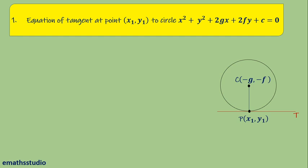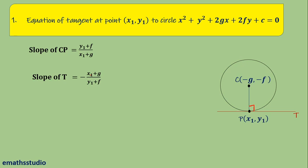First of all, I have joined CP. Now CP has a slope, which can be obtained by the formula (y2 − y1)/(x2 − x1), so it becomes (y1 + f)/(x1 + g). Since CP and the tangent are perpendicular to each other, the slope of the tangent will be the negative reciprocal of the slope of CP, which can be written as −(x1 + g)/(y1 + f).